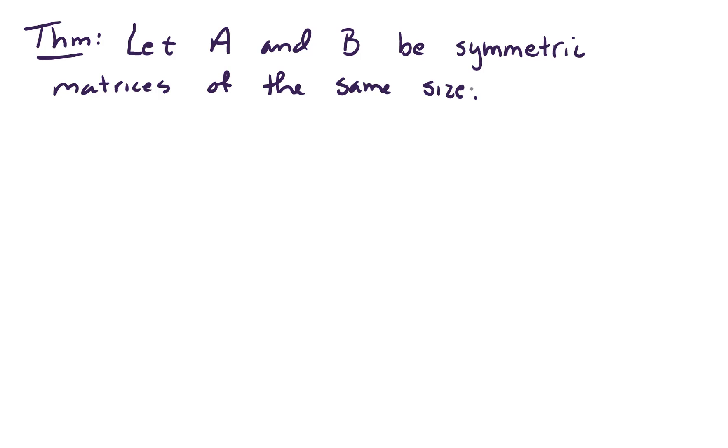Let A and B be symmetric matrices of the same size. And the claim is that the product A times B, A times B is symmetric if and only if, and we sometimes see that written with the double arrow signifying the biconditional, but I'll write it if and only if. A times B equals B times A. In other words, the product A, B is symmetric if and only if the matrices commute under multiplication.